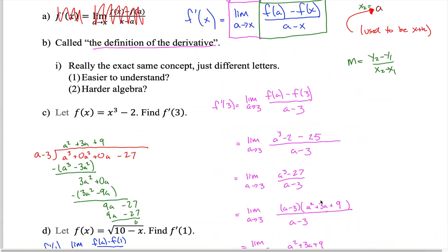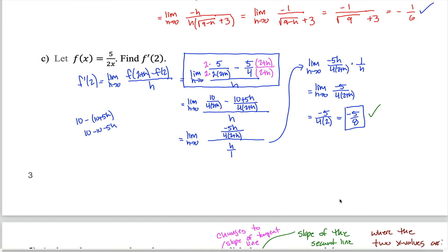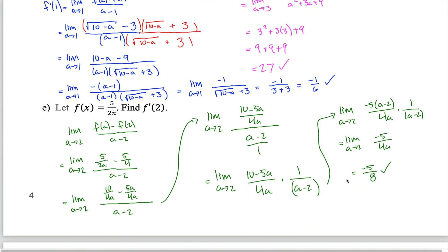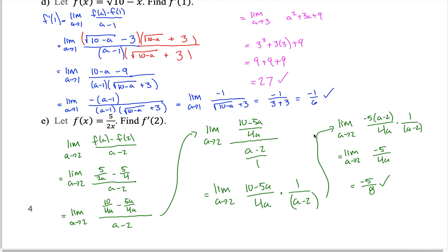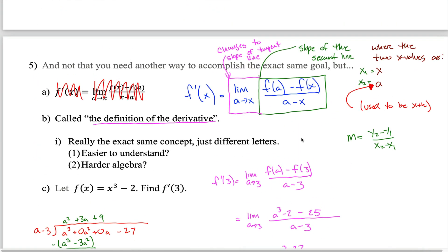Harder or easier? It doesn't really matter — maybe the common denominators here are slightly cleaner than in the other approach. The point wasn't to argue this way is easier or harder, just that it's another equivalent way to find the derivative. It's called the definition of the derivative, and it might be useful to have two different ways to solve a given problem.